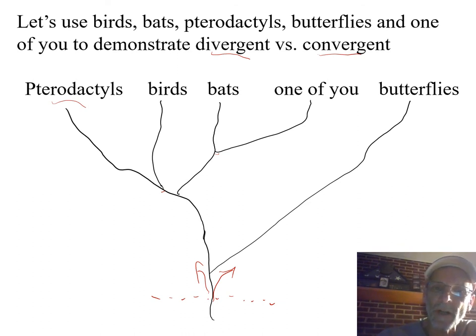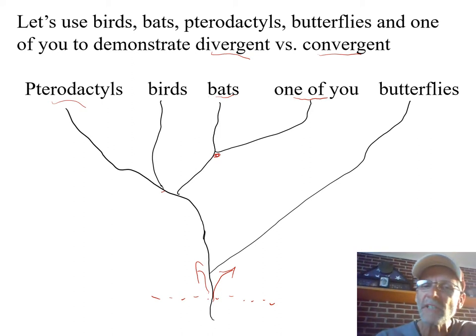So, you would predict that bats and one of you would show the most similarities based on this, because you've been evolving separately from a common ancestor for the least amount of time. Therefore, you piled up the least amount of differences.